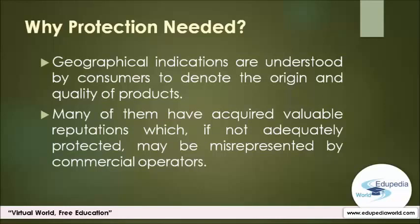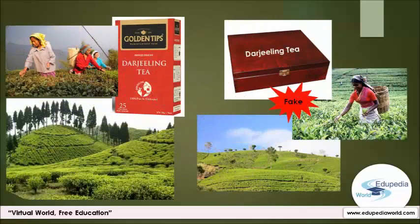Why do geographical indications need protection? Geographical indications are understood by consumers to denote the origin and quality of products. Many have acquired valuable reputations which, if not adequately protected, may be misrepresented by commercial operators. False use of geographical indications by unauthorized parties — for example, using 'Darjeeling' for tea not grown in the tea gardens of Darjeeling — is detrimental to consumers, who are deceived into believing they are buying a genuine product, and to genuine producers, who are deprived of valuable business and suffer damage to their established reputation.